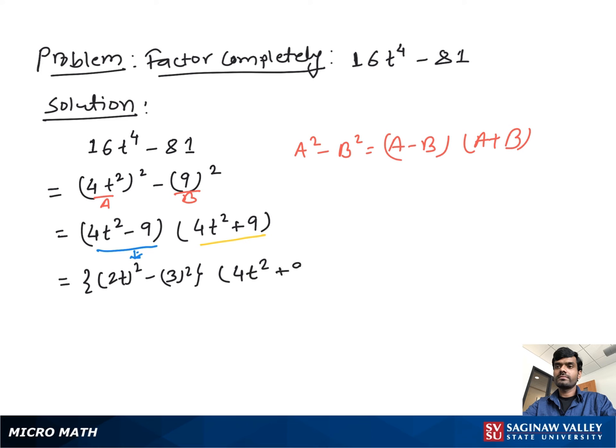Now if we suppose 2t as a and 3 as b, we can further write a minus b times a plus b. So we can write 2t minus 3 times 2t plus 3, and remaining 4t square plus 9.